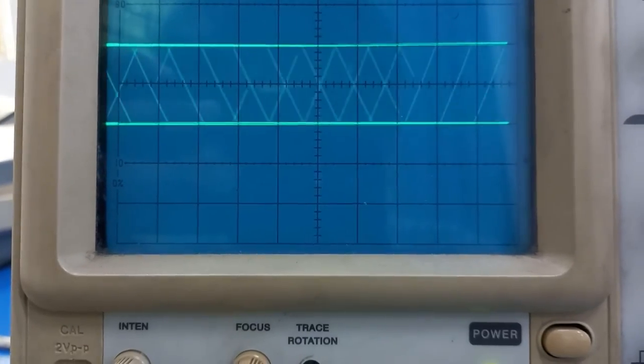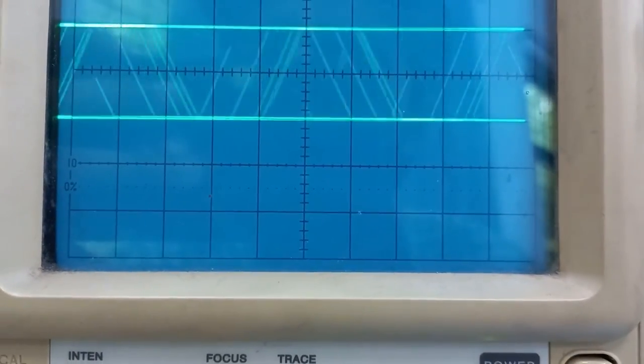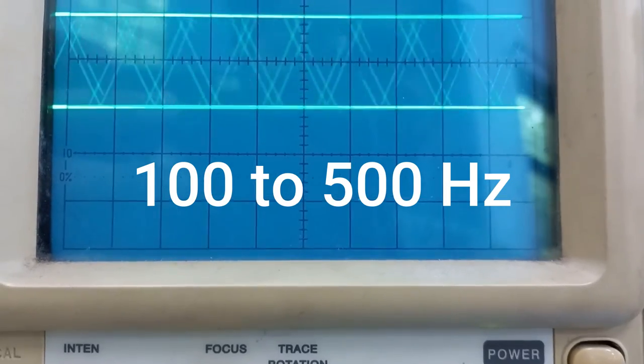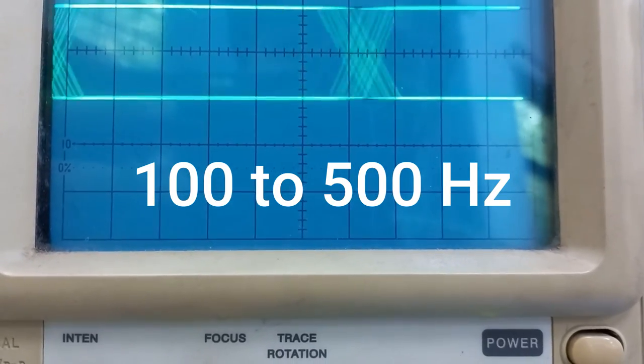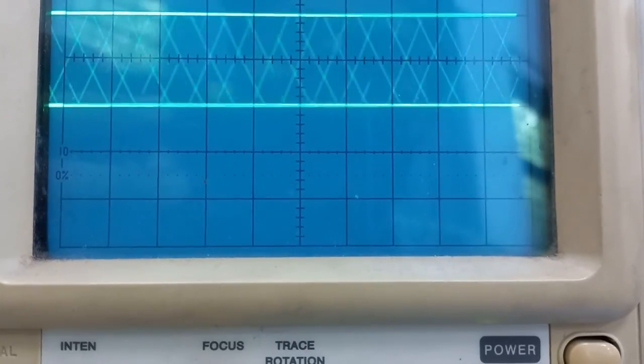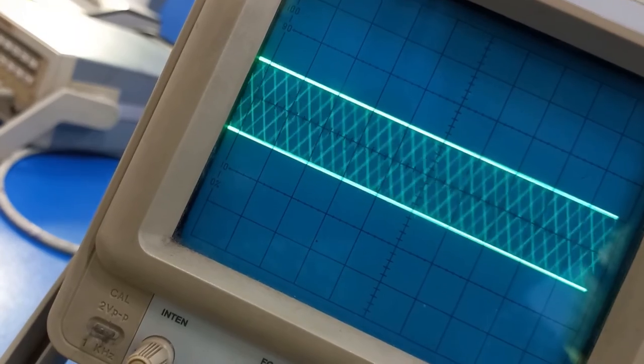After the external trigger is applied from the function generator to the oscilloscope, we will use the function generator with a frequency range from 100 Hz to 500 Hz. We will vary this frequency within this range and see where our signal stabilizes and forms a clear-cut eye diagram, as shown in the figure. Let me show you how it works.